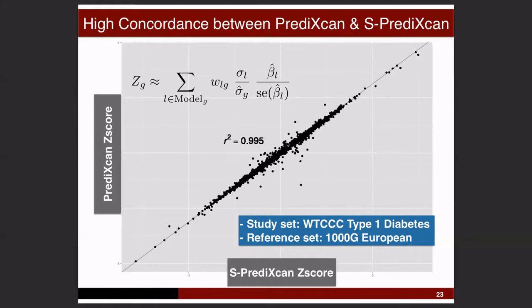We used a 1000 Genomes reference for the LD, but had we used the same reference as the GWAS study sample, the results would be nearly 100% one-to-one. Just as the field is now sharing GWAS results very openly — and many journals make that mandatory for publication — we should also try to convince people to share LD information from the same study population.